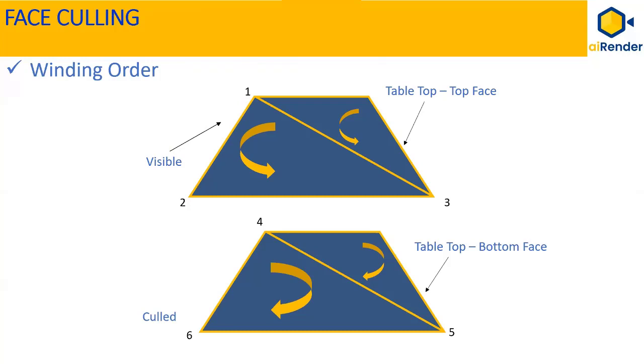Now, all triangles with clockwise winding order are culled and rest of the triangles with counter-clockwise winding order are retained and are visible.